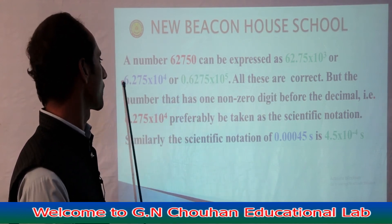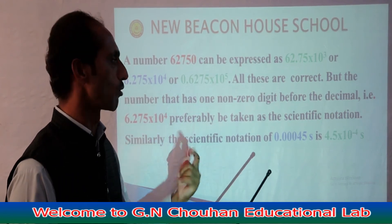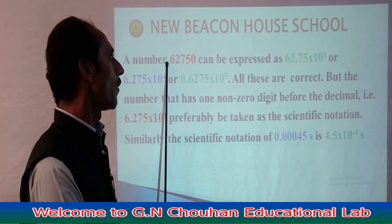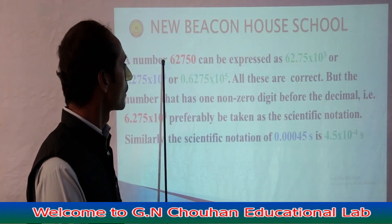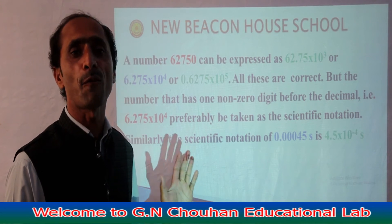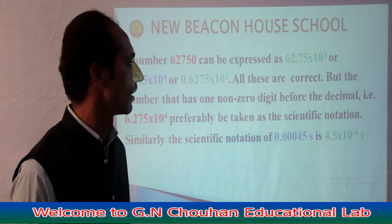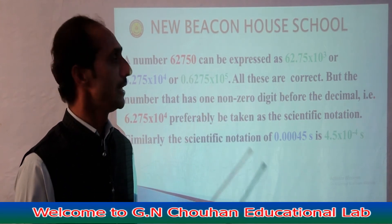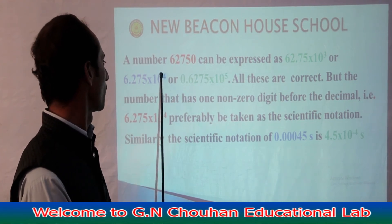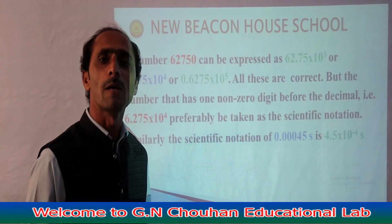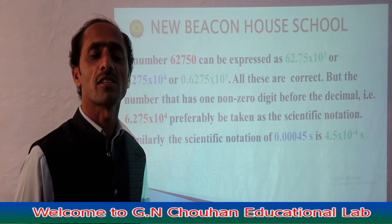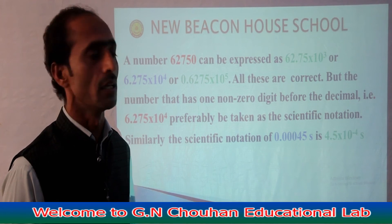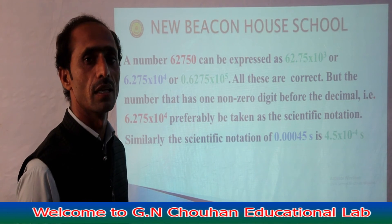Some more examples: 6.275 × 10^4, and also 0.6275 × 10^5 — where the point was moved and a zero was added before 6. In the second case, the point was moved 5 digits, so the power is 10^5. All three representations are correct and are scientific notations, but the most appropriate and preferable one is 6.275 × 10^4.